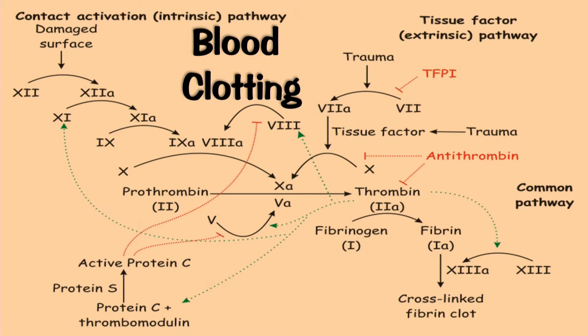Some of the main components of the clotting cascade are proteins — there's fibrinogen and prothrombin, also proacceleran, and another called Stuart factor. None of these are used for any other purpose in the blood except blood clotting.